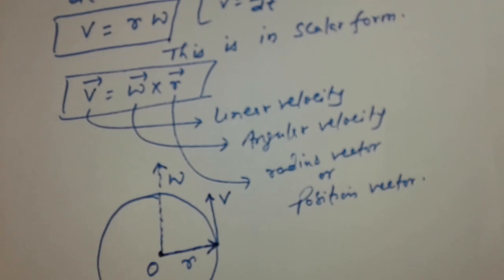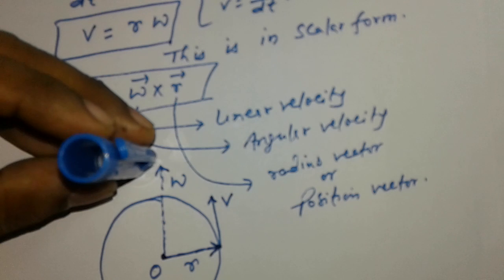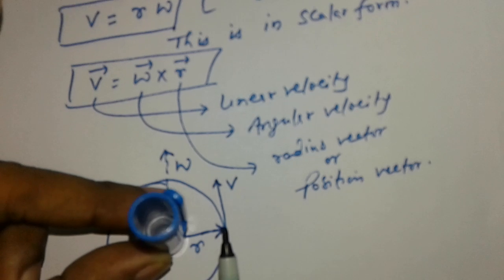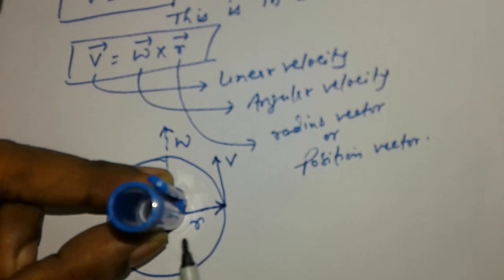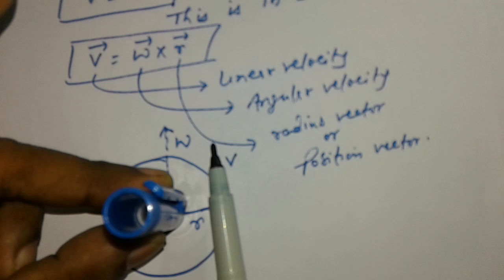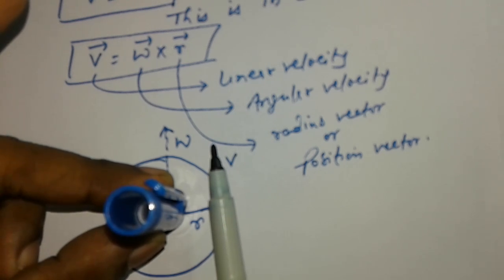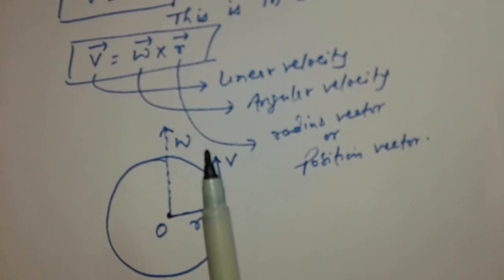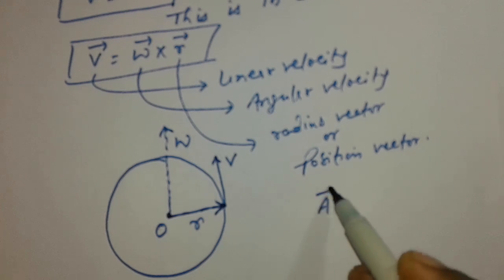Omega is like this and R is this. Omega cross R, this is V. This is with the help of a right hand thumb rule or a screw rule.